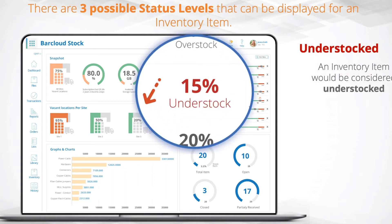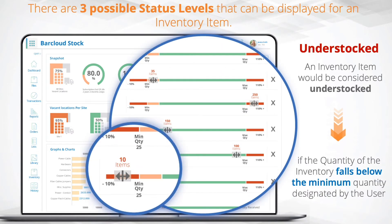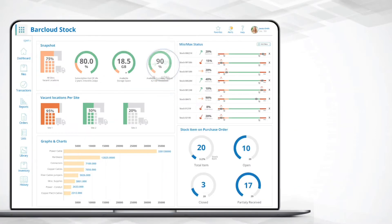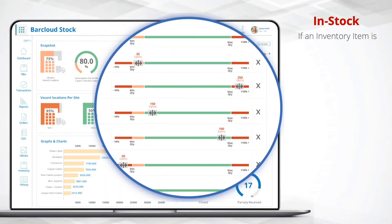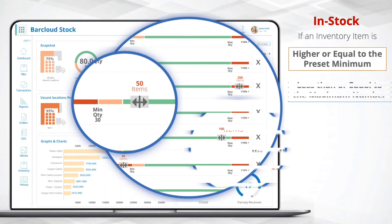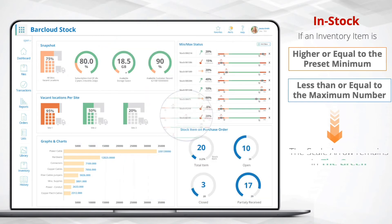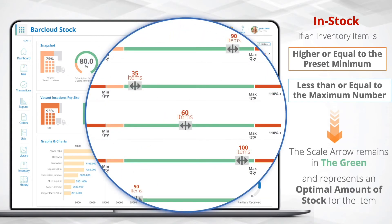Understocked: An inventory item would be considered understocked if the quantity of inventory falls below the minimum quantity designated by the user. In Stock: If an inventory item's quantity is higher or equal to the preset minimum and less than or equal to the maximum number, the scale arrow remains in the green and represents an optimal amount of stock for the item.